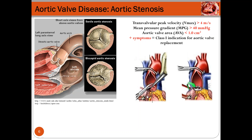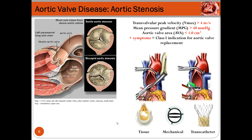When that happens, we need to replace the diseased valve with a prosthetic valve. Options include tissue valves made from bovine material, mechanical valves which can be bi-leaflet, mono-leaflet, or ball-cage, and new technologies such as transcatheter valves — better known as TAVI. For the focus of this presentation, we will particularly discuss aortic valve area and how we assess it with MRI.